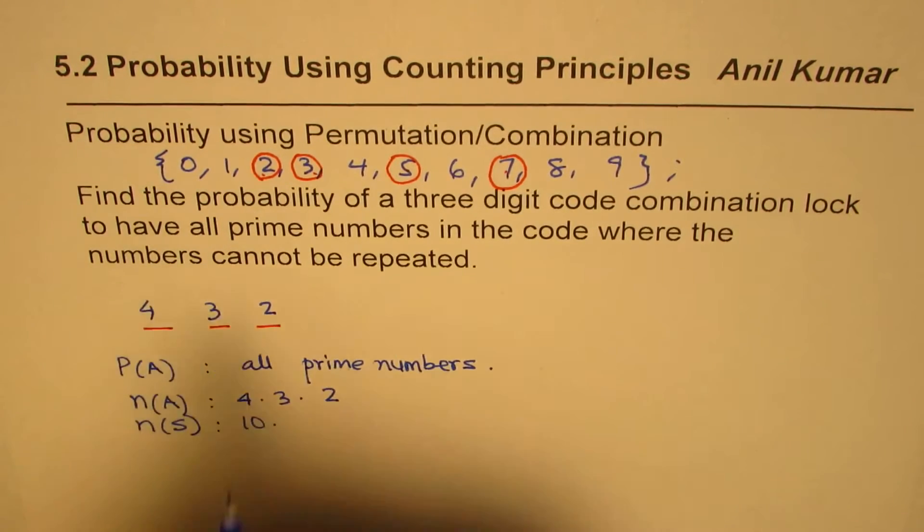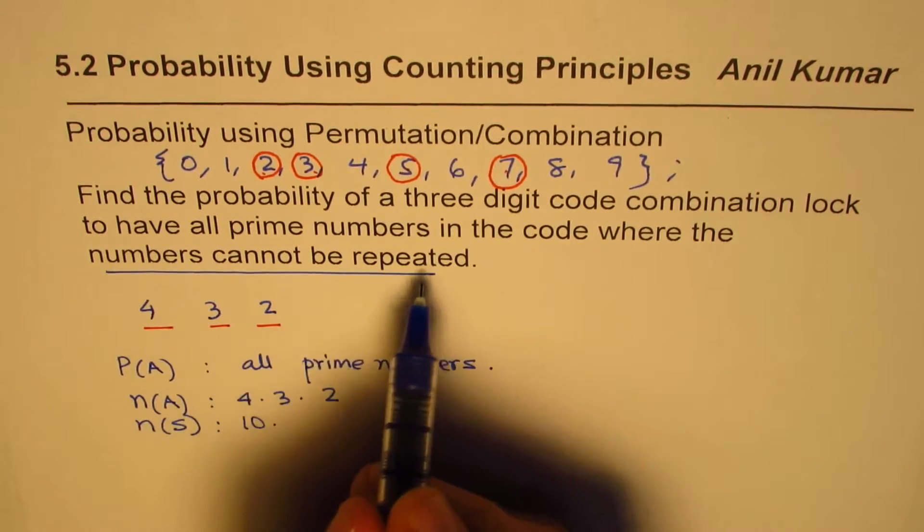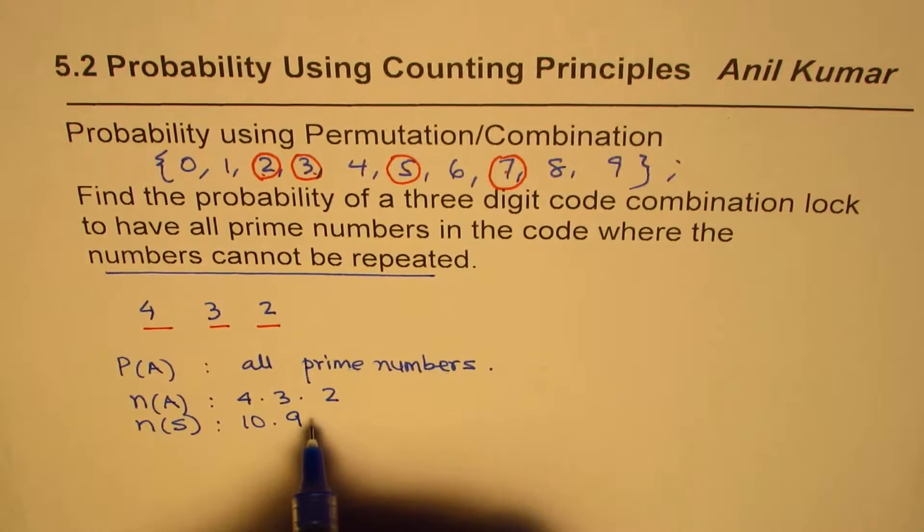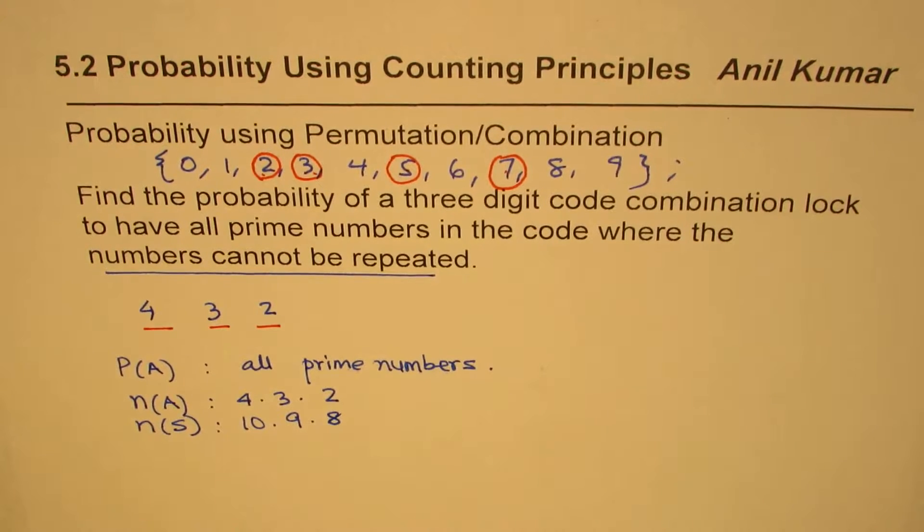If you place one of them, since the numbers cannot be repeated, we are left with 9. And when the second number is consumed, we are left with 8. So these are the total possible outcomes.